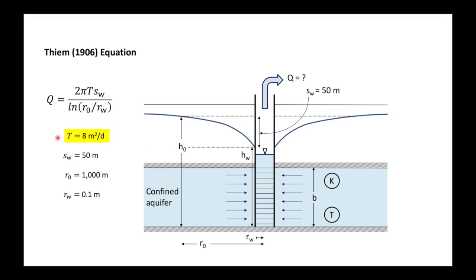Here our missing number, transmissivity of 8 meters squared per day. If we plug it into our equation, we get 2 times π times the transmissivity times the drawdown in the well divided by natural logarithm of the radius of influence divided by the radius of the well, and we end up with 273 cubic meters per day.